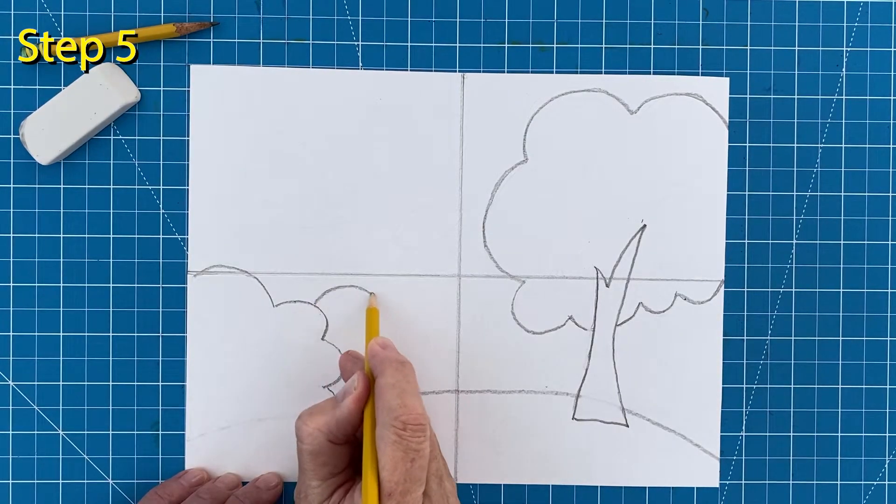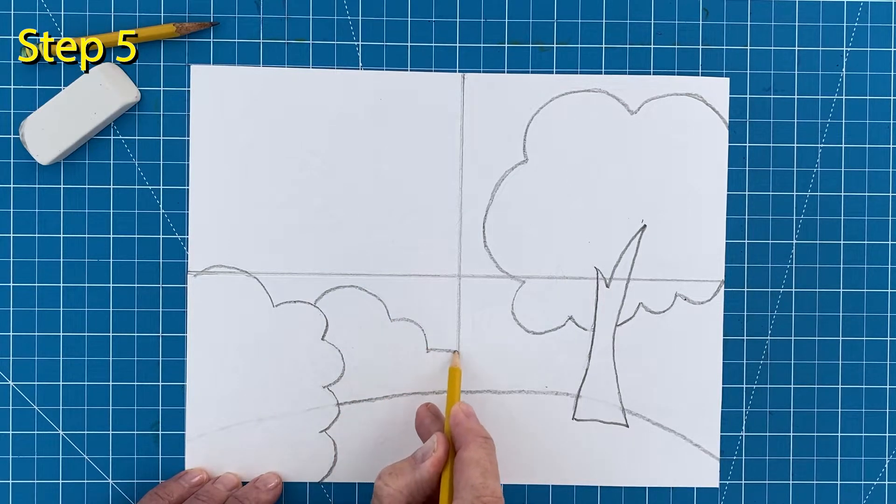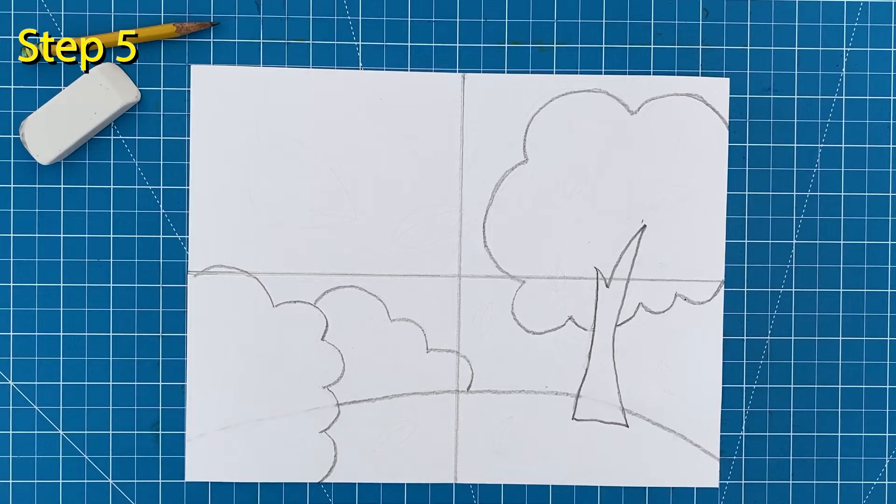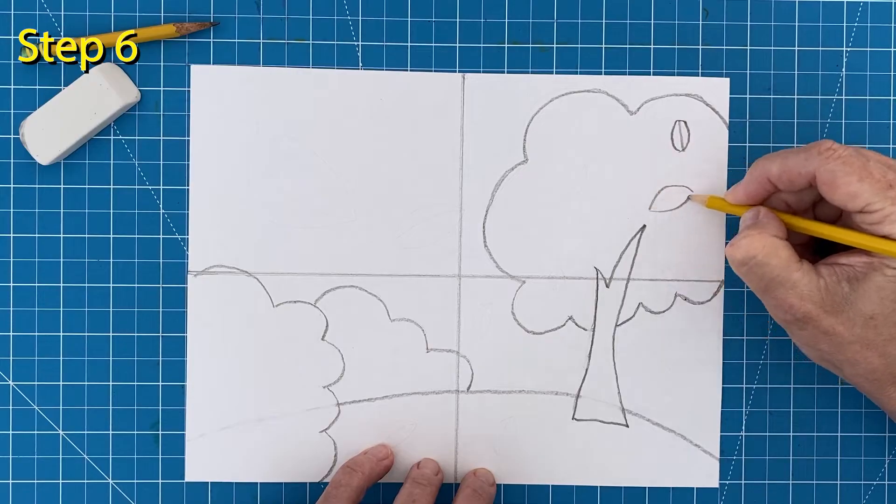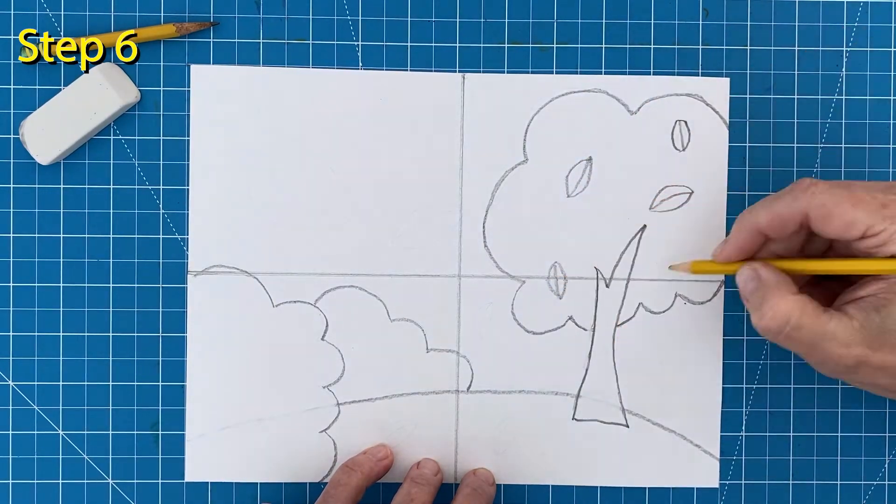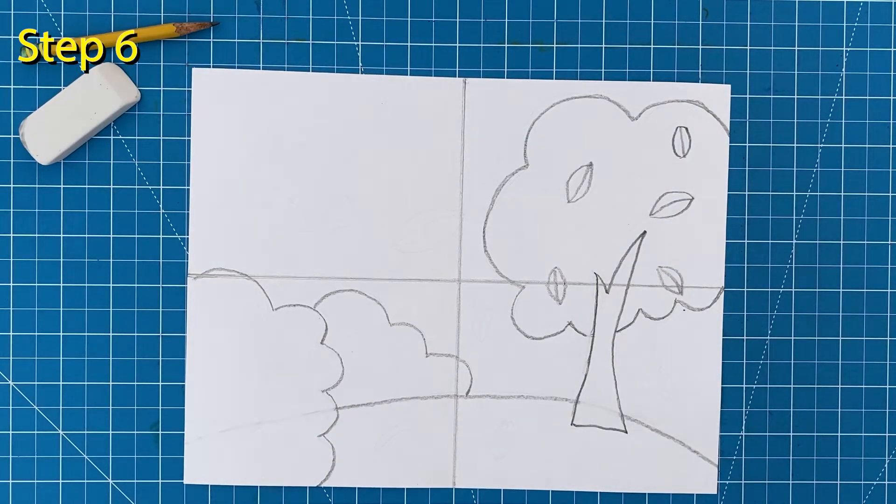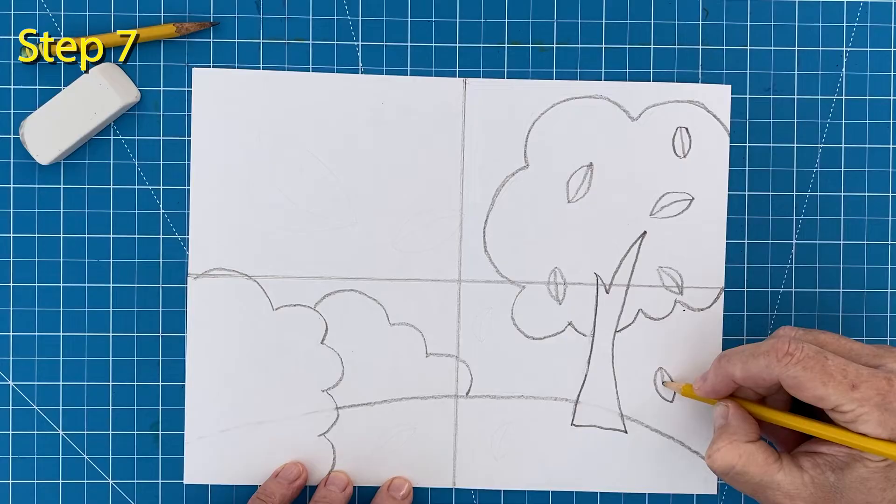Step number five. Now add a smaller bush behind the big one. You know layers also add some perspective to your drawing. Step number six. Draw about a half dozen leaves inside the tree. Step number seven. Then add a few of those same leaves falling to the ground.